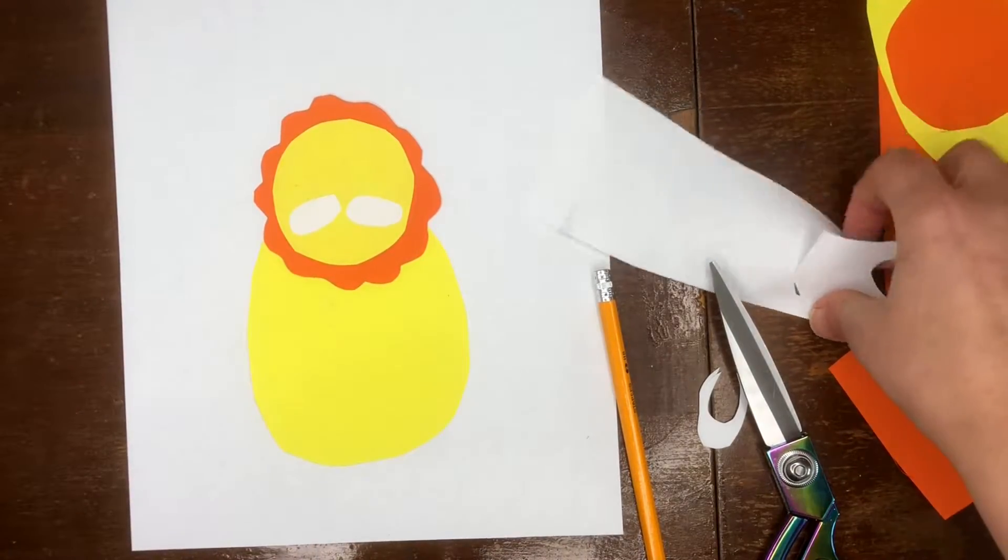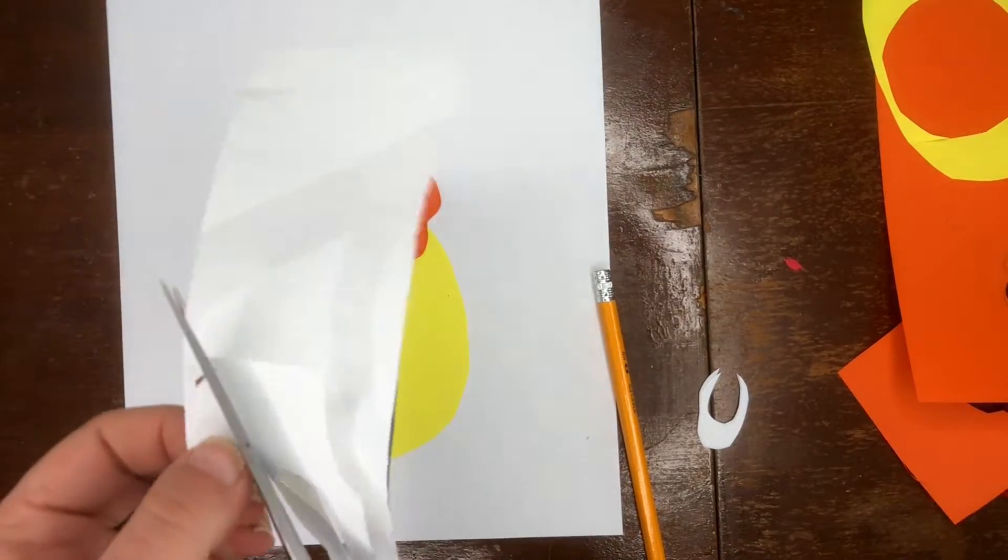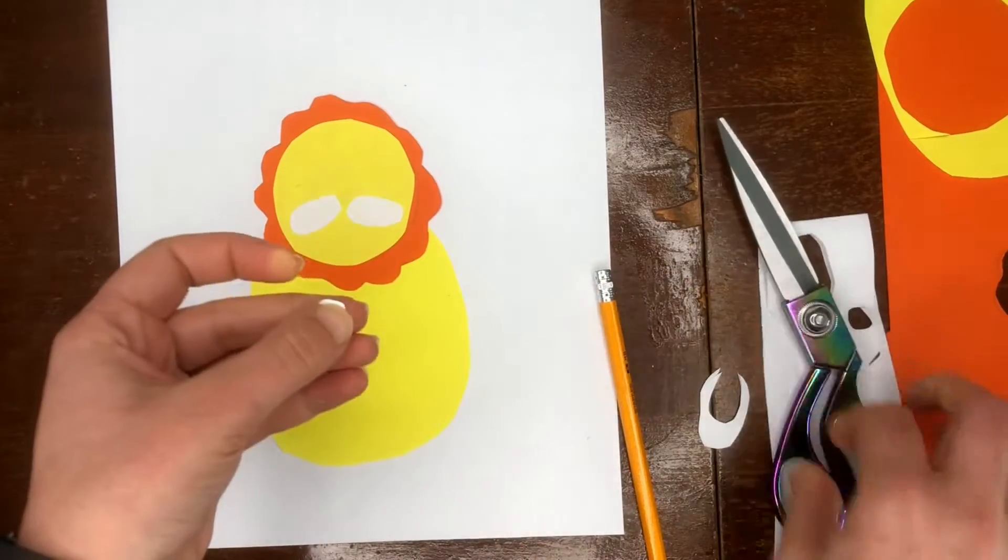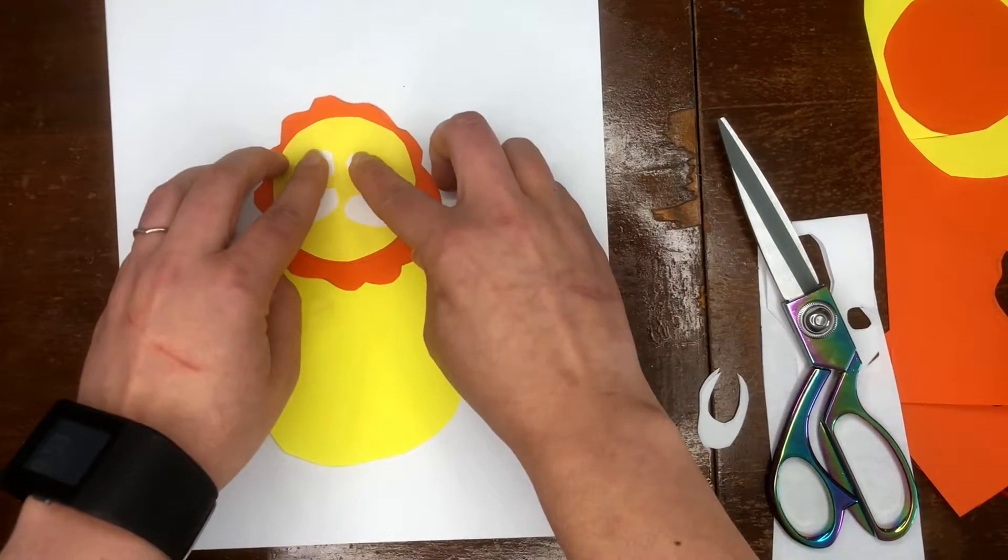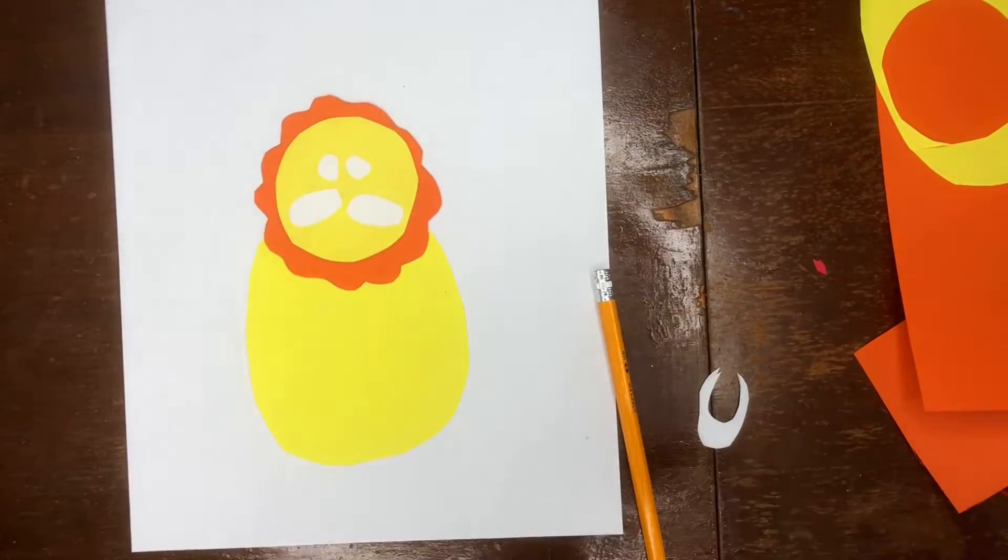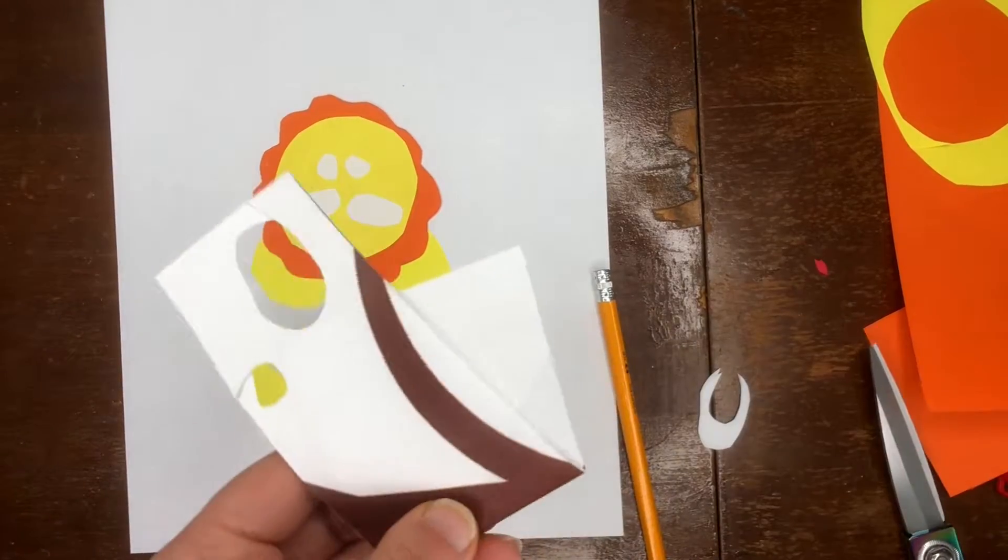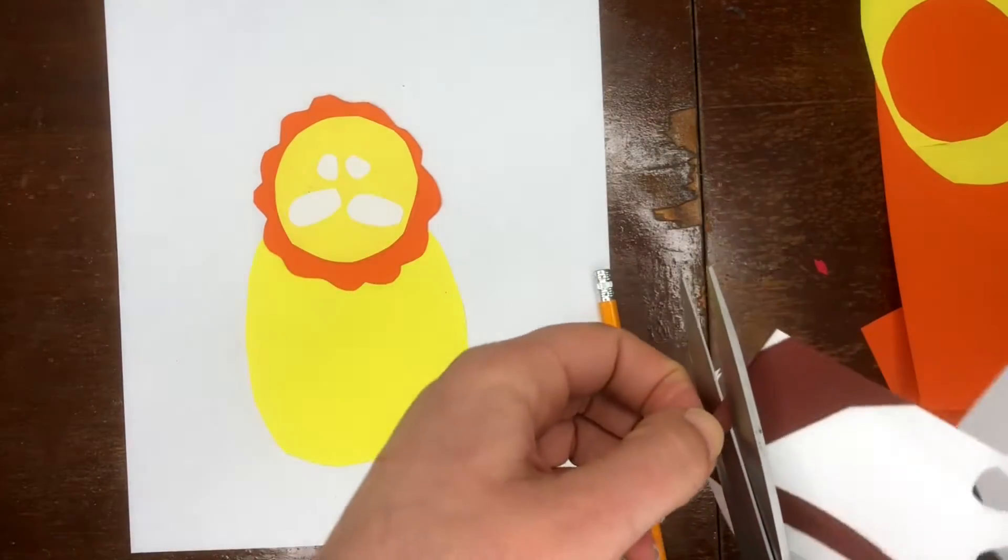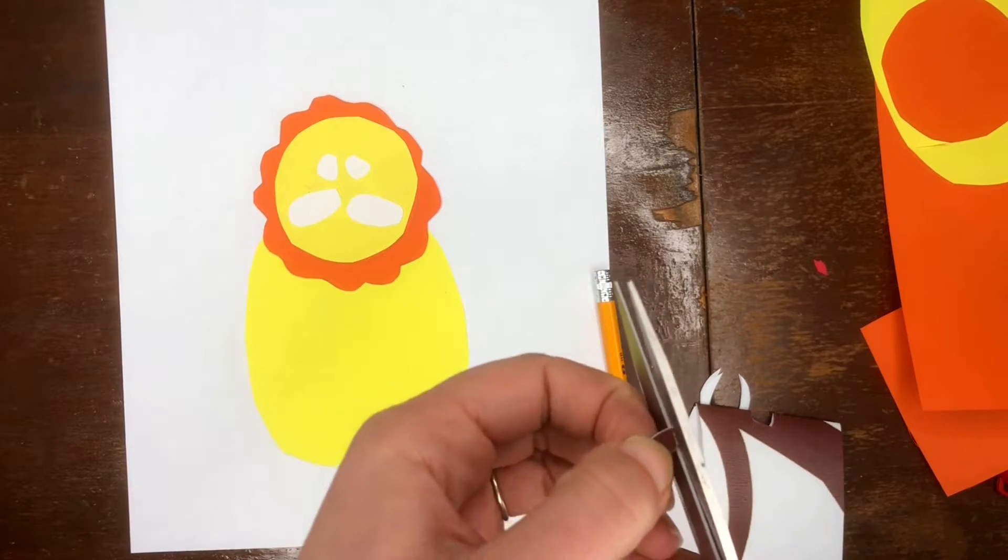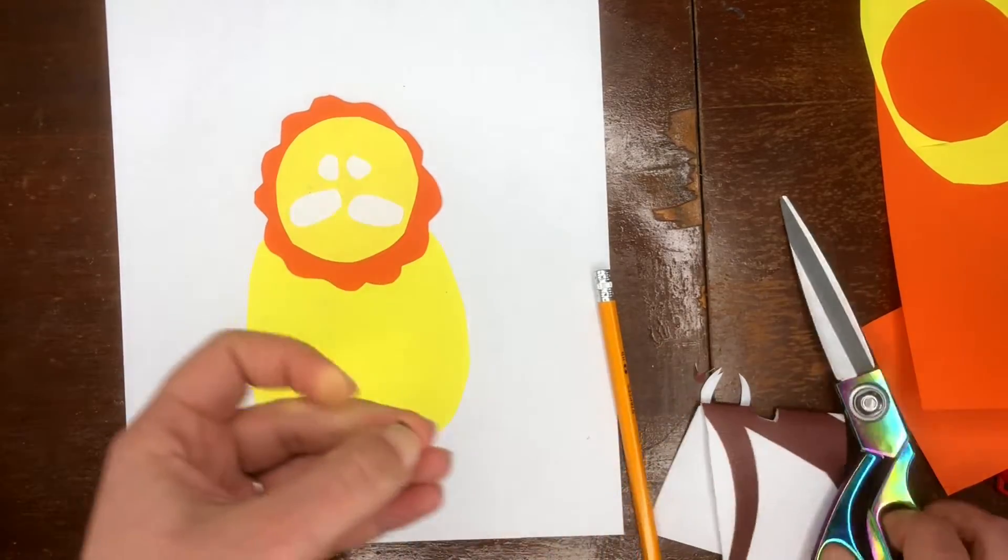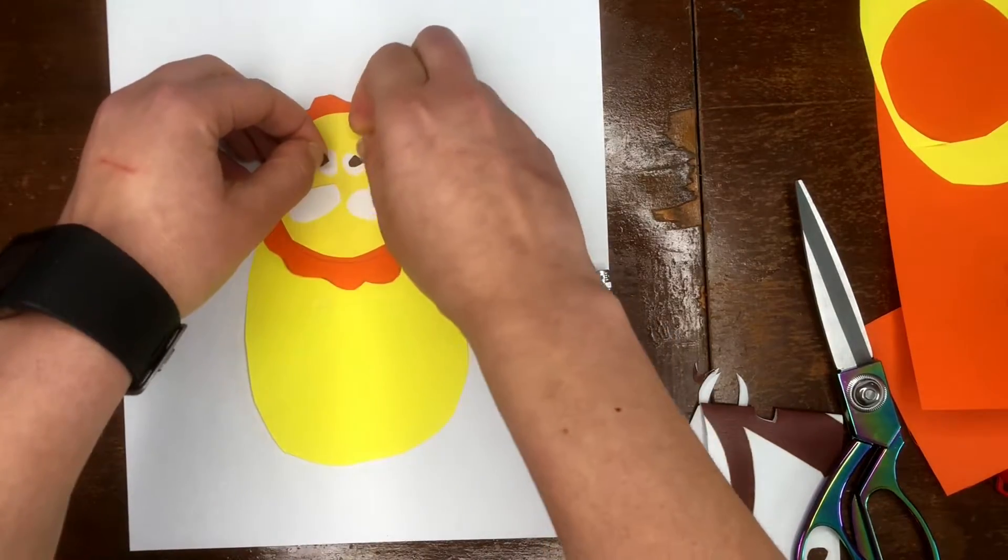We're gonna want two white circles for the eyes and then two black or brown circles for inside the eye. If you have squiggly eyes, those would be perfect too. You can also color in your eyes. Those will go right there.